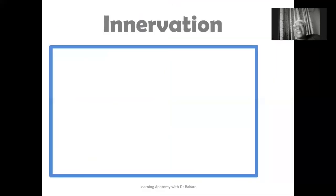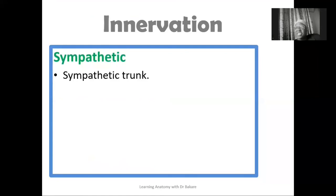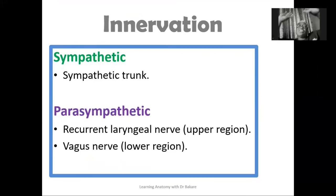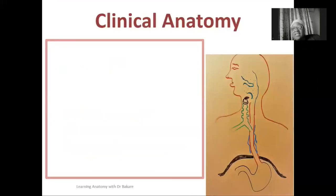For innervation: sympathetic innervation of the oesophagus is supplied by the sympathetic trunk. For parasympathetic innervation, the recurrent laryngeal nerve supplies the upper region of the oesophagus, and the vagus nerve supplies the lower region.